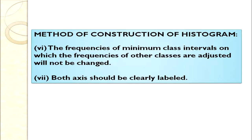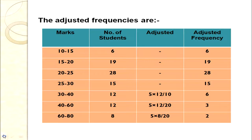The frequencies of classes with the minimum class interval gap will not be changed. For 10–15, 15–20, 20–25, 25–30 the frequencies are not adjusted — they remain 6, 19, 28, and 15. The adjusted frequency for 30–40: 5 × 12 ÷ 10 = 6. For 40–60: 5 × 12 ÷ 20 = 3. For 60–80: 5 × 8 ÷ 20 = 2.